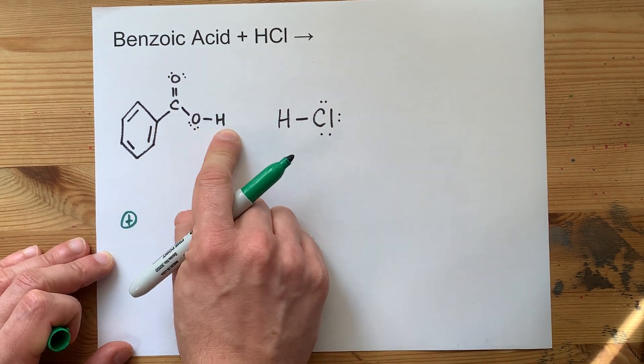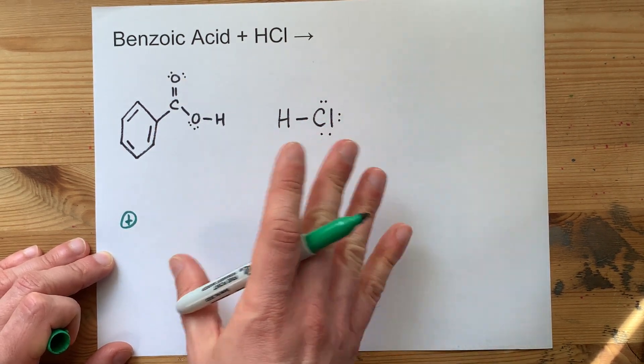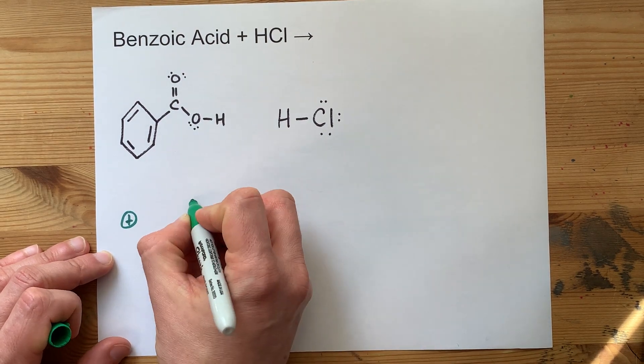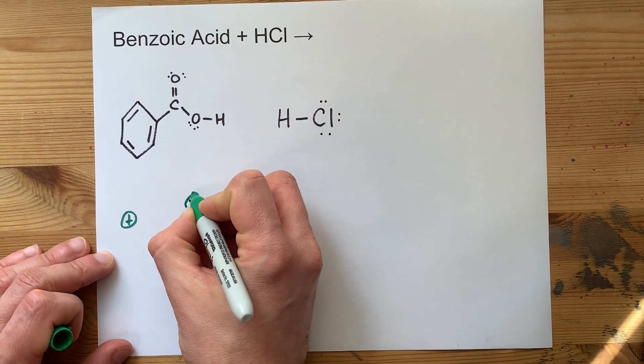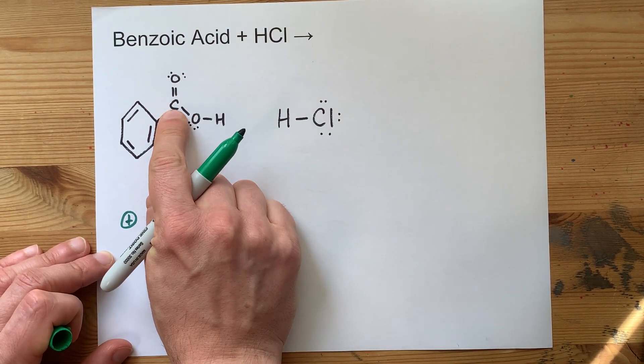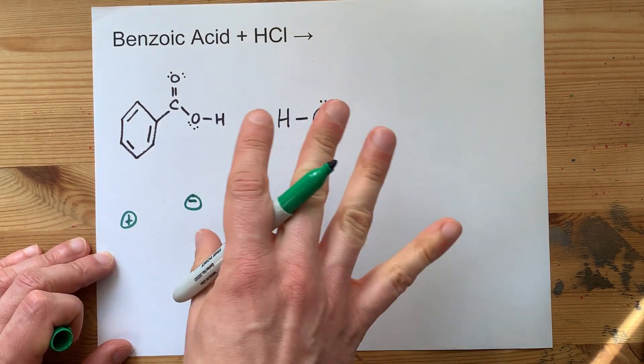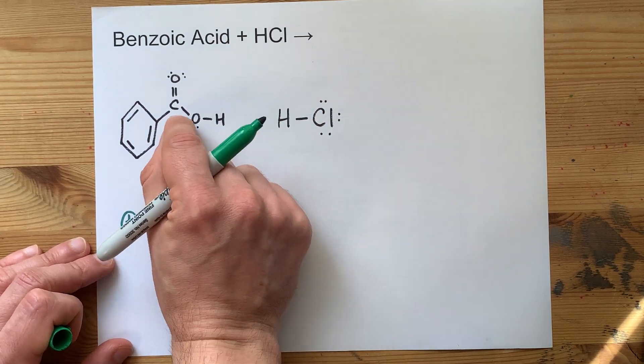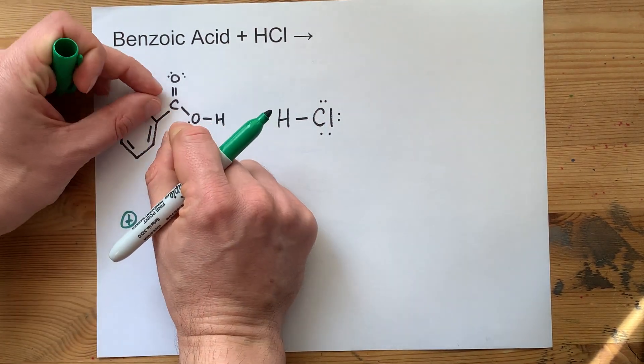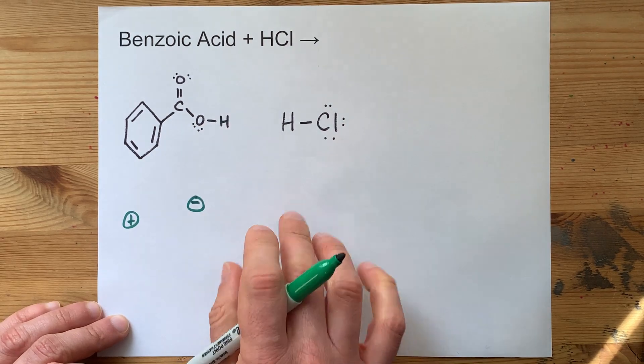When you have a carboxylic acid, the most common attack I see on that is something strongly negative attacking in here. This carbon is attached to two electronegative atoms, and so it's slightly positive, simply because the electrons in these bonds are more drawn to the oxygen than the carbon.